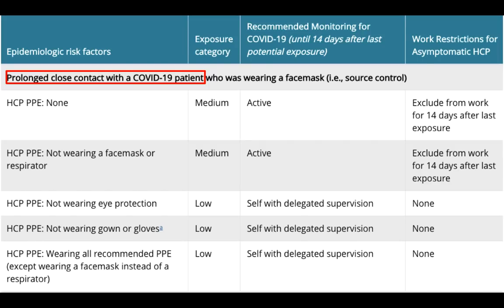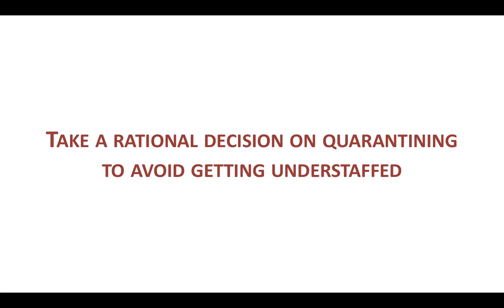The CDC guideline is extremely detailed, but again, home quarantining is recommended only for prolonged close contact with a COVID-19 patient, not for brief contact. We need to take a rational decision on quarantining to avoid getting understaffed. If we wear a surgical mask during a brief encounter with a COVID-19 patient — like a brief X-ray or CT encounter — then we are likely safe and don't need to quarantine, though monitoring temperature is advised.